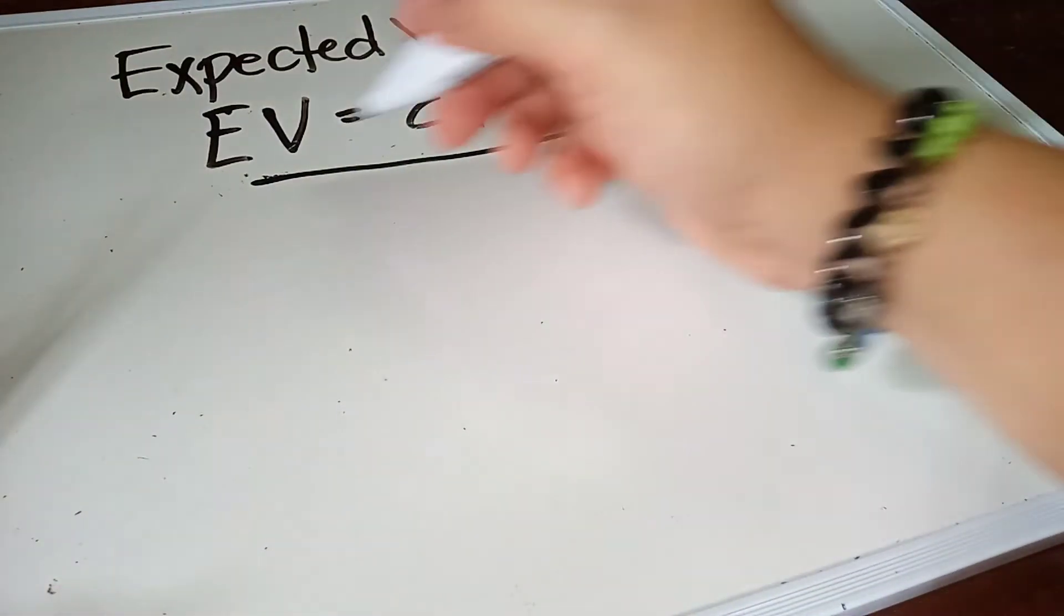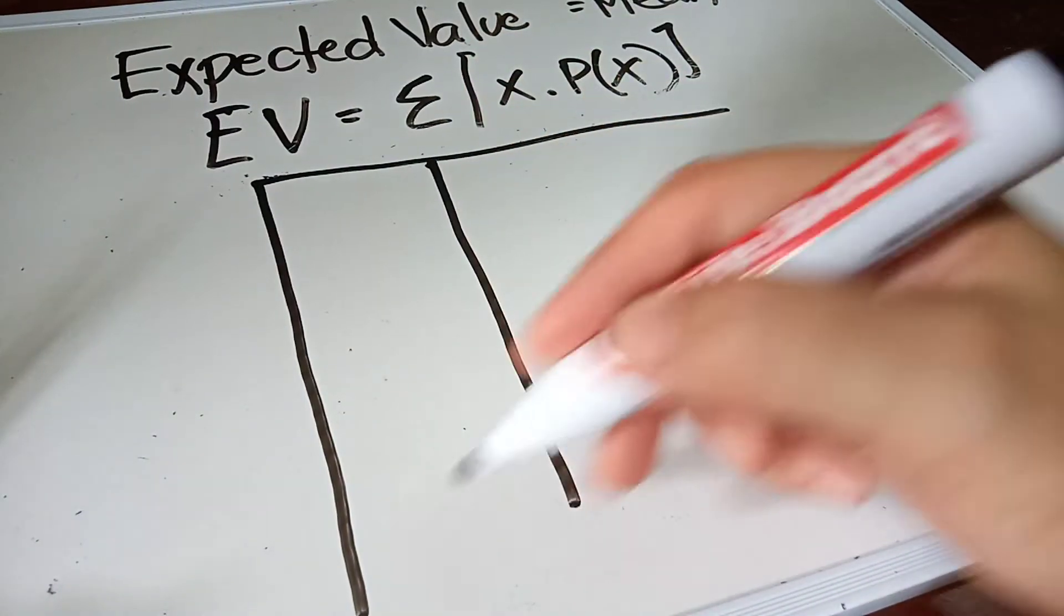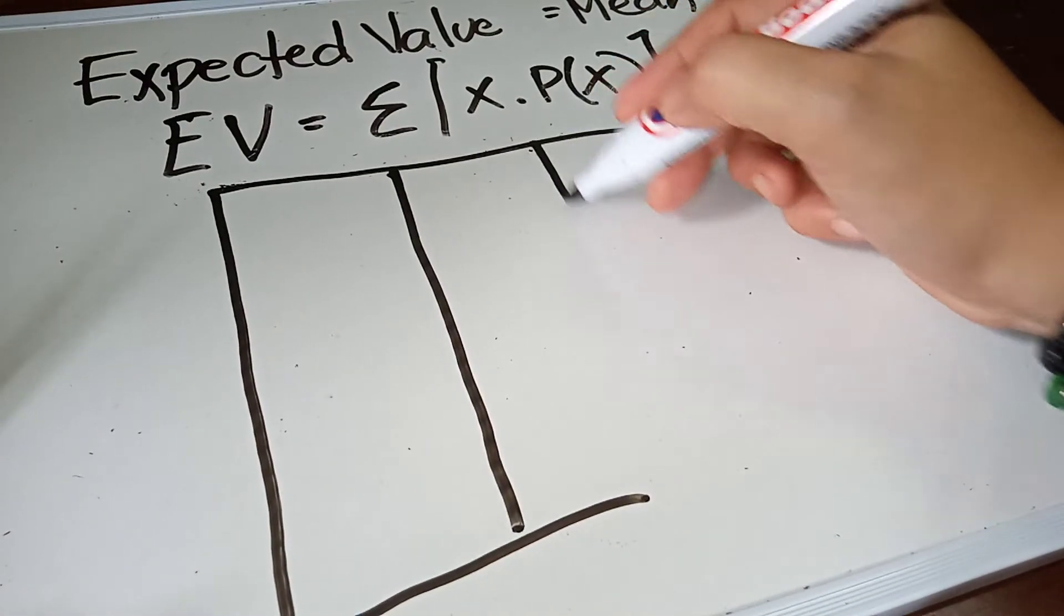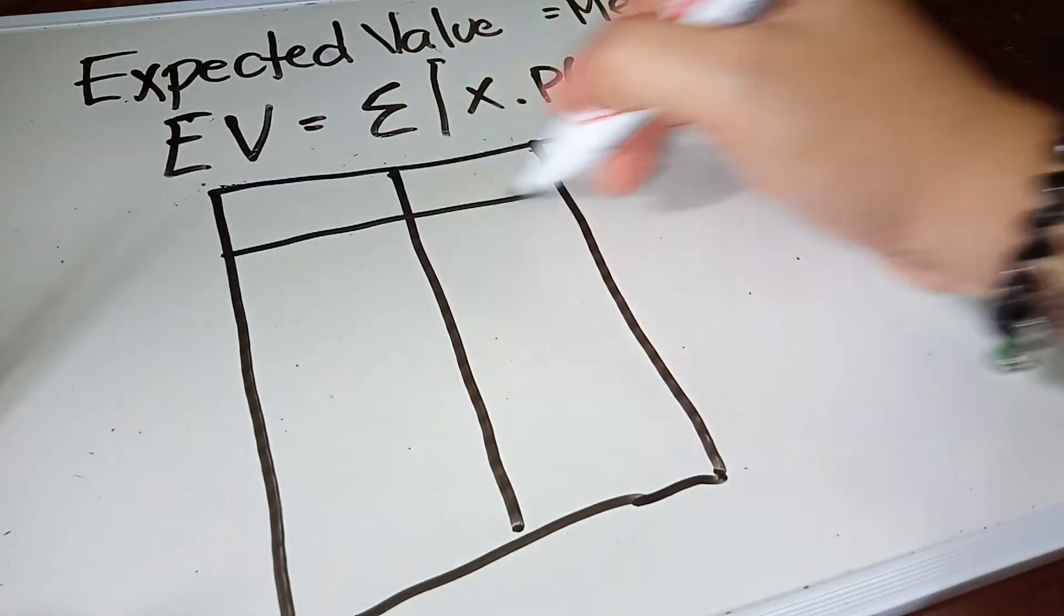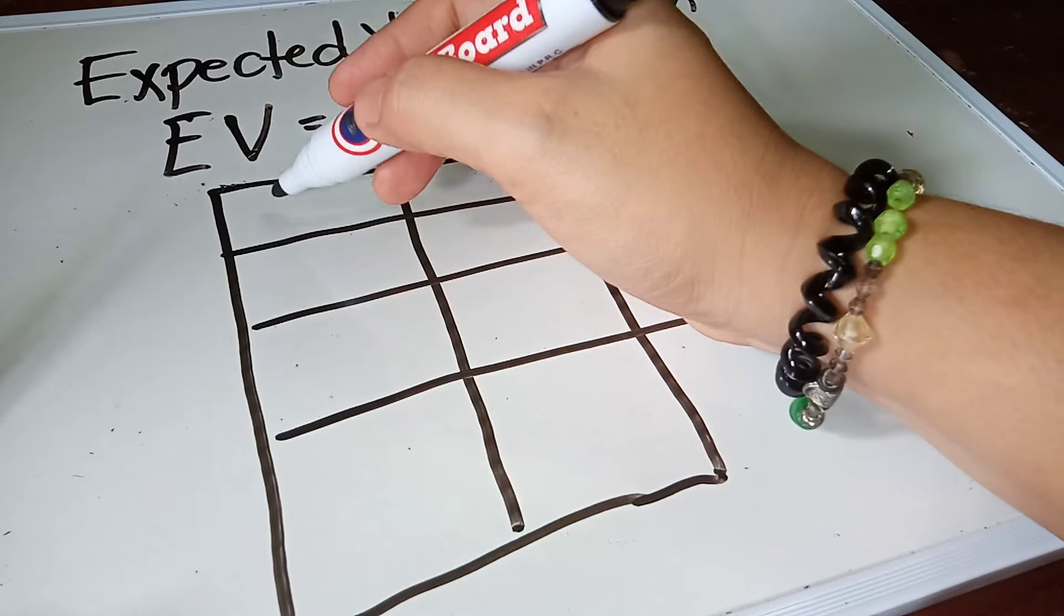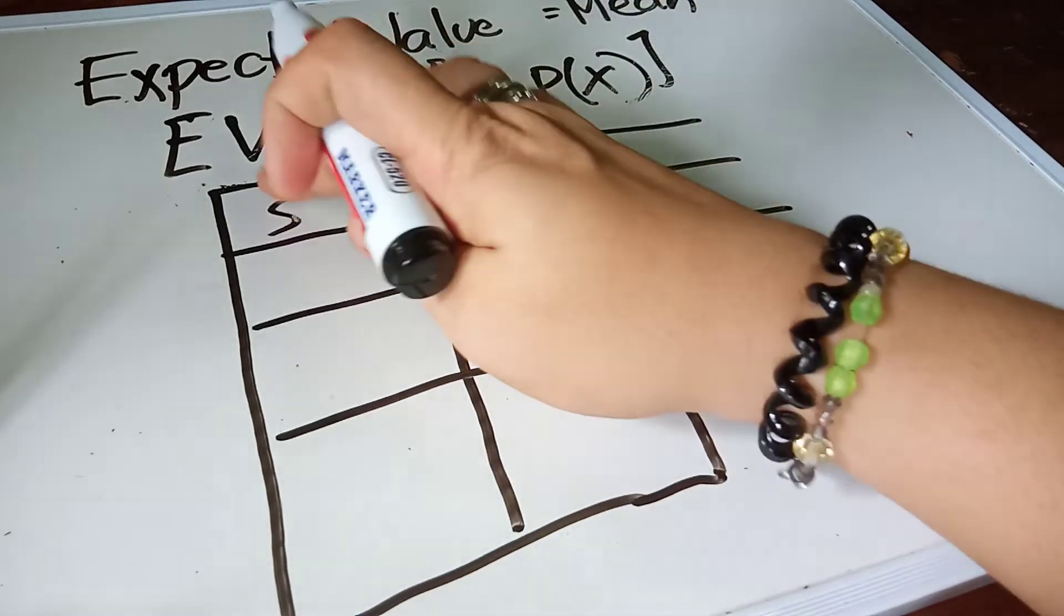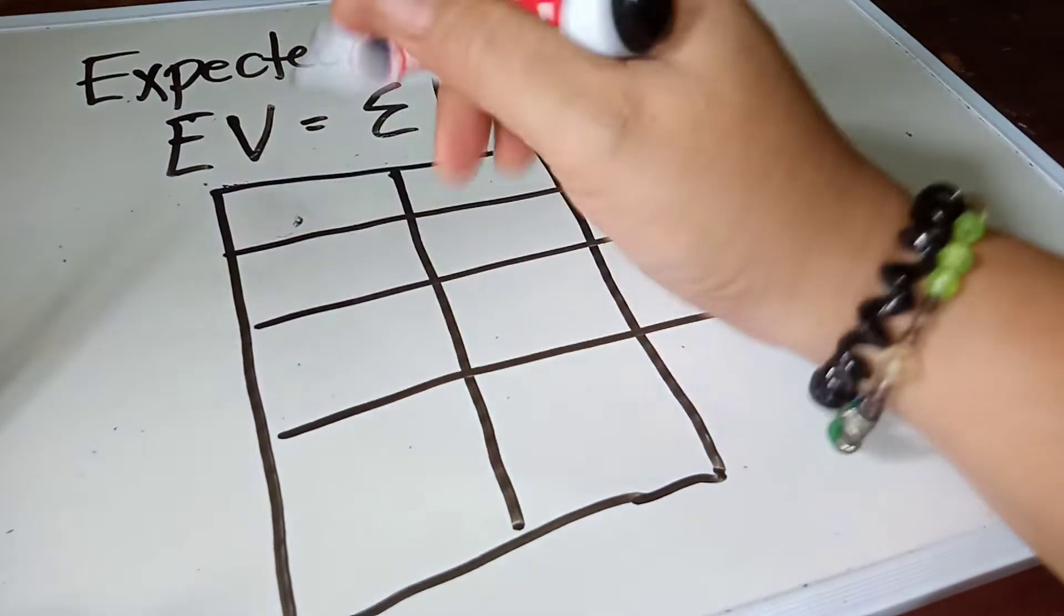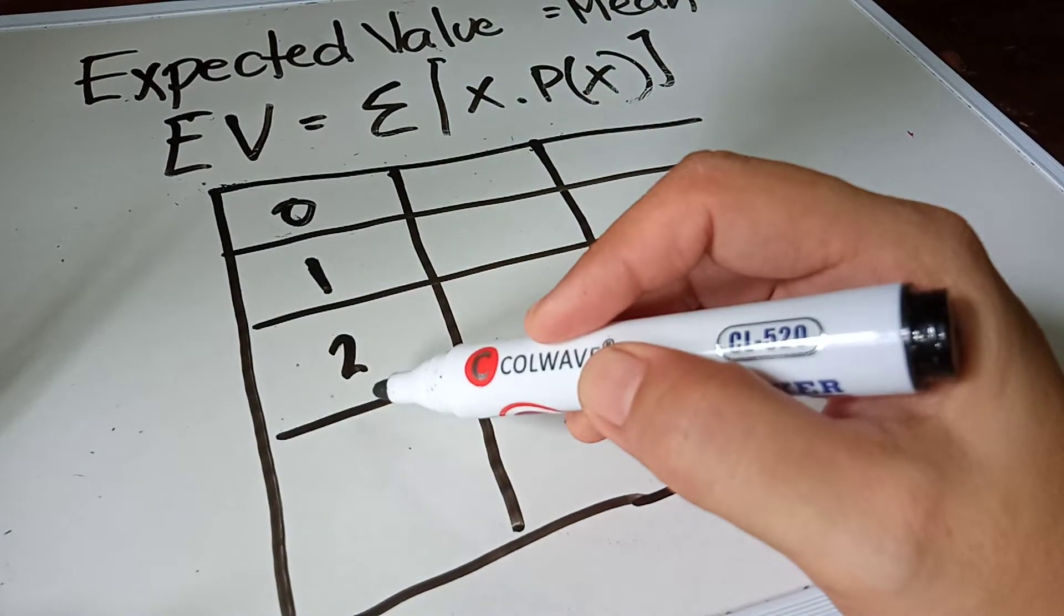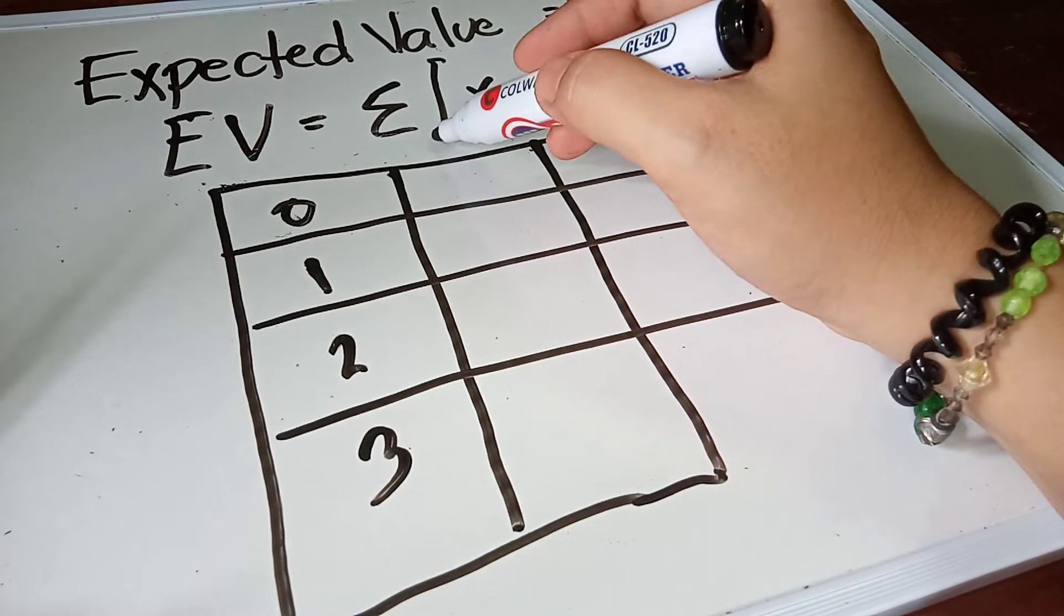Suppose that this is the given. How do we, let's have this value. We have the sample space for them. We have the zero, we have one, two, and three. So zero, we, this is the probability of x.